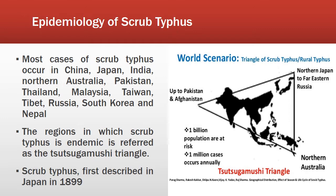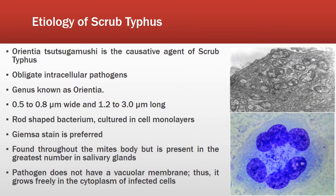It was first described in Japan in 1899. Regarding the etiology of scrub typhus, Orientia tsutsugamushi is the causative agent. It is an obligate intracellular pathogen, genus Orientia, measuring 0.5 to 0.8 micrometers wide and 1.2 to 3 micrometers in length. It is a rod-shaped bacterium cultured in cell monolayers. The stain used for identification is Giemsa stain. It is found throughout the mite's body but is present in greatest number in the salivary glands. The pathogen does not have a vacuolar membrane, so it grows freely in the cytoplasm of infected cells.